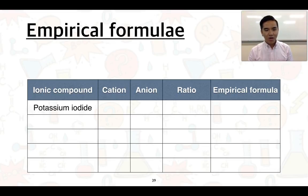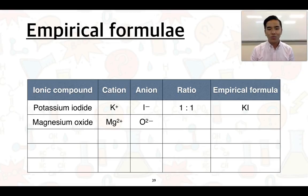Starting with potassium iodide, we've got K+ being the potassium cations, I- being the iodide anions. This has a ratio of one to one, so its empirical formula is KI. Magnesium oxide: we've got Mg2+ ions with O2- ions. We still have a ratio of one to one, so its empirical formula is simply MgO.